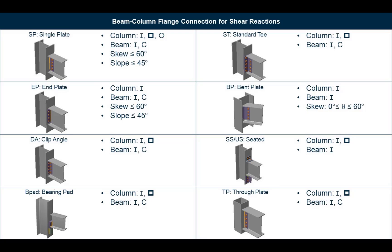We will be designing the beam-column flange connections for the gravity beams that were designed in RAM Steel Beam. In RAM Structural System, all gravity steel beams support gravity loads only, such as dead load and live load, and they are assumed to be simply supported, which means they will require a connection capable of resisting shear forces.